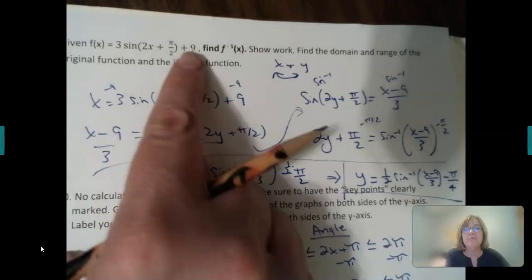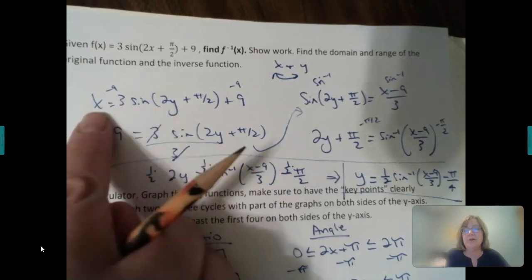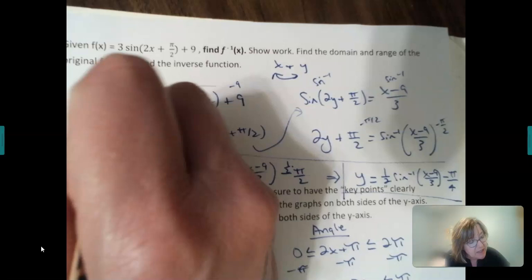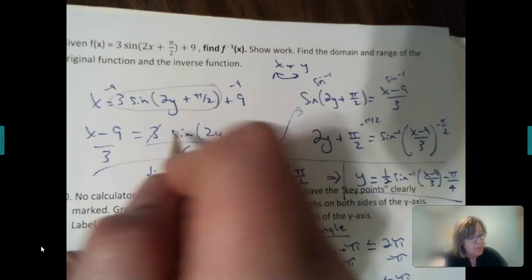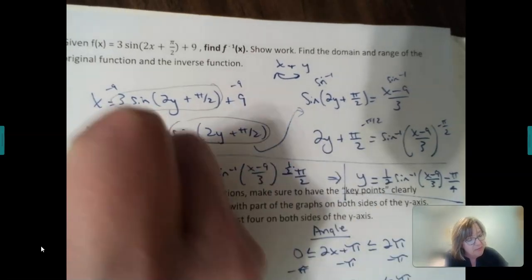Okay, to find an inverse, remember input becomes output, output becomes input, so flip-flop your x and y. And then again, how do you solve a function? You isolate the chunk first, so get rid of the minus 9, then you get rid of, you want just the function part, so divide by 3.